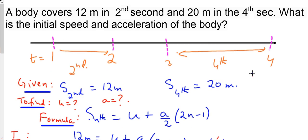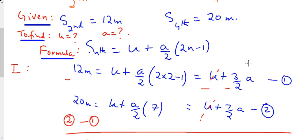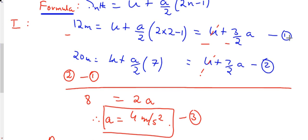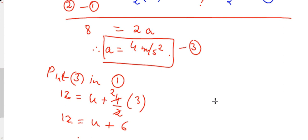Physics is very simple math. If you remember the equations and convert the problem into them, it becomes a question of linear equations in two variables. We used the elimination method here to solve. Acceleration = 4 m/s², initial velocity = 6 m/s.